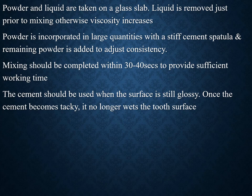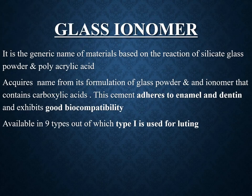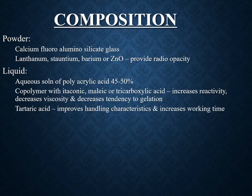Glass ionomer cement is widely used and is a generic name for material based on the reaction of silicate glass powder and polyacrylic acid. The name comes from the glass powder and ionomer that contains carboxylic acid. The cement adheres to enamel and dentine and exhibits good biocompatibility. It is available in nine types, of which type 1 is the luting type.